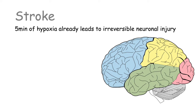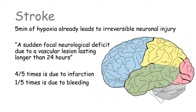A stroke may be defined as a sudden focal neurological deficit due to a vascular lesion lasting longer than 24 hours. Four out of five times a stroke will be due to infarction, which is a death of tissue due to obstruction of the blood supply. And one out of five times it will be due to bleeding or hemorrhage.